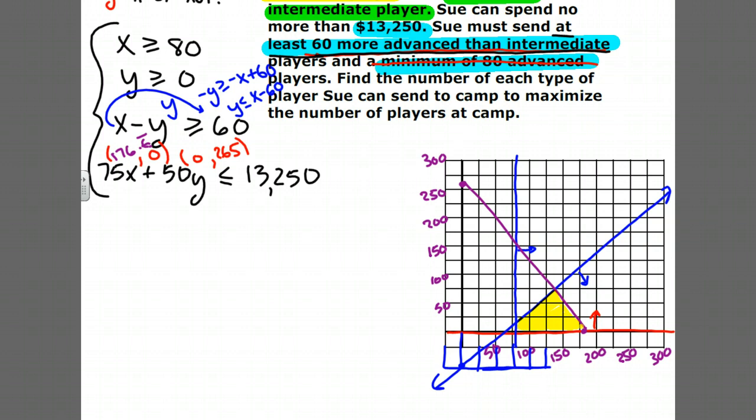When we have our feasible region, we're actually looking for the vertices. Where are the vertices here? The vertices are going to maximize the number of players at camp. We're trying to maximize the number of players, which is going to be equal to X plus Y. We do that by finding each one of these vertices and determining when we add the two together which one gives you the most.